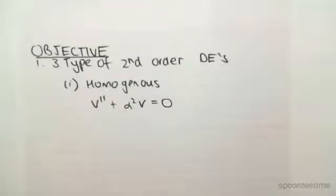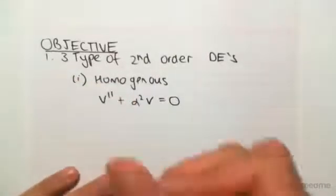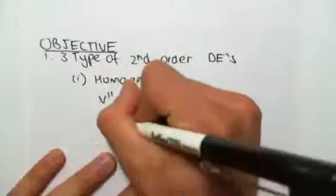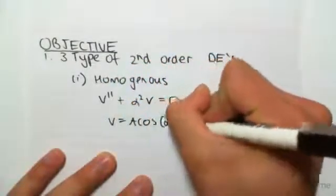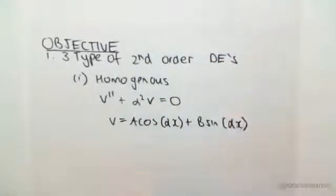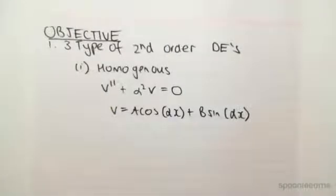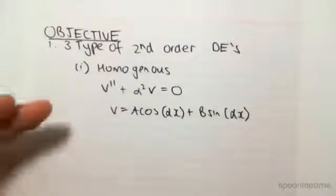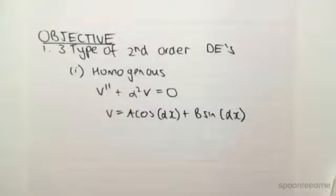Now, the solution to this, so there's a whole long process of how to solve this, but I'm literally just giving you the solution. The solution looks like this, v equals a cos alpha x plus b sine alpha x. Now, to get that solution from there to there is a lot of steps, and it's very complex, and this isn't a course in maths. This is a course in structural analysis, and therefore, this is not that important how to go from there to there. You just have to know that this is the solution to this.